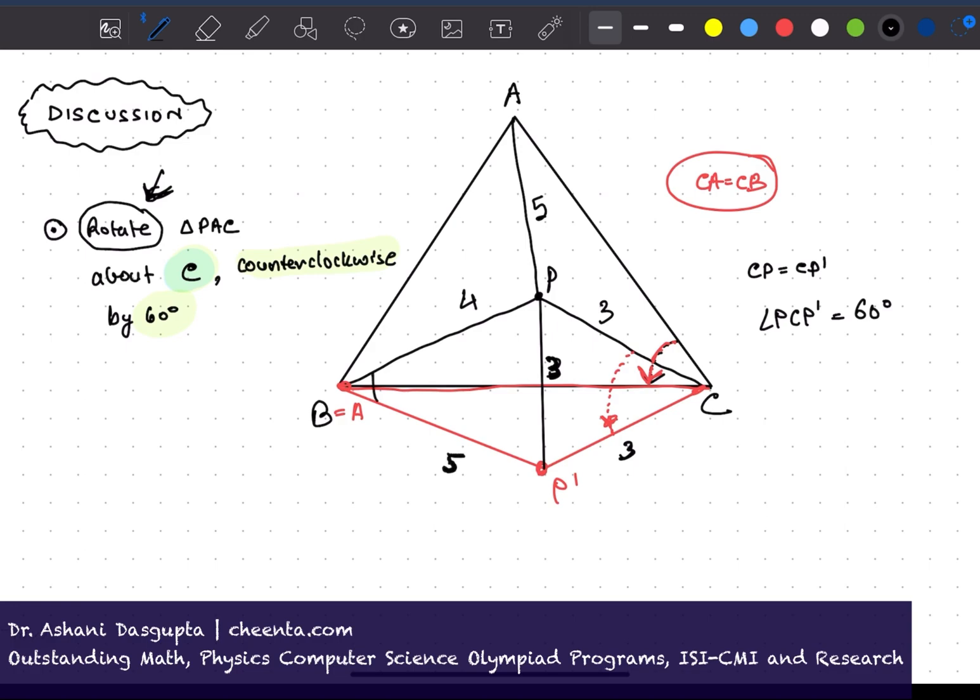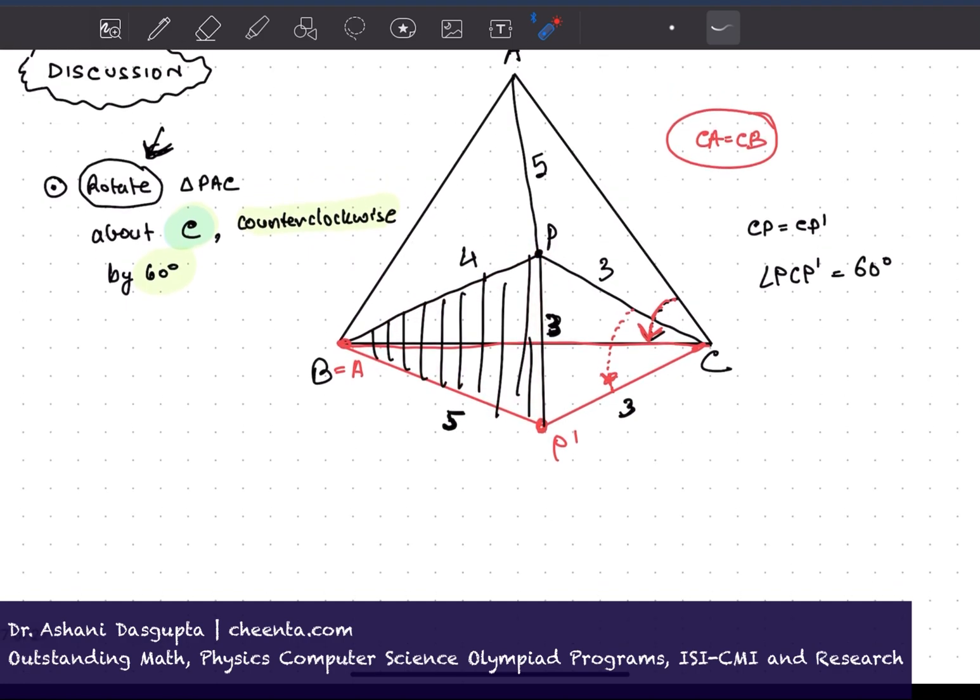So now we have a 3, 4, 5 triangle. This is 3, this is 4, this is 5. Which means it's a right triangle. It's a right angle triangle. That means this angle right here is 90 degrees. Let me draw that in a different color. This is 90 degrees.